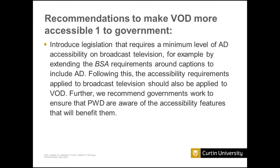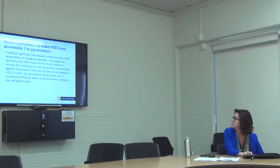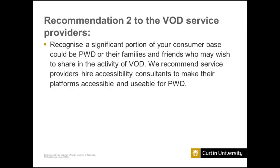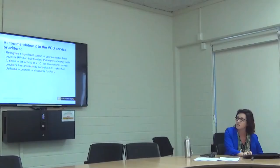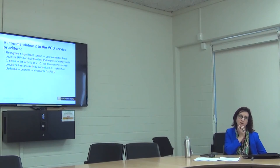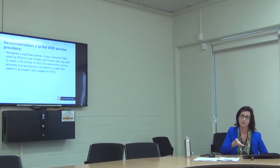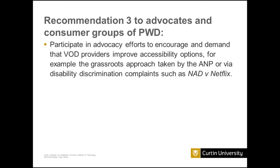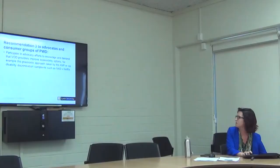Our recommendations to government included introducing legislation and working with people with disabilities. To video on demand service providers, we recommended: recognise people with disabilities as a proportion of your audience — who have families and friends they might want to watch TV with. With people with disabilities making up 20% of the population, and including their families and friends, the audience is huge. We suggested hiring accessibility consultants to make it happen, and encouraged people with disabilities to get involved in advocacy efforts like the Accessible Netflix project or disability discrimination complaints.